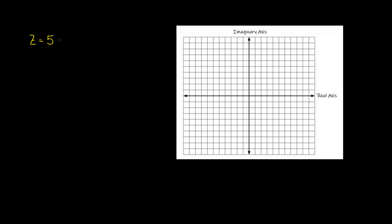The first one we're going to talk about is how we can relate z equals 5 cis(3π/4). That 3π/4 is a pi — a weird-looking pi but it's a pi. First we need to identify the values of r and theta: r is equal to 5, theta is equal to 3π/4.